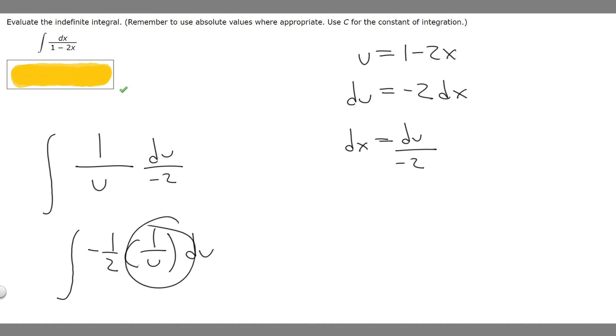So we take the anti-derivative of 1 over u, it's ln of the absolute value of u, and then we're multiplying by minus 1 half because that's our constant out front. And then whenever you take an anti-derivative, you've got to add plus C.